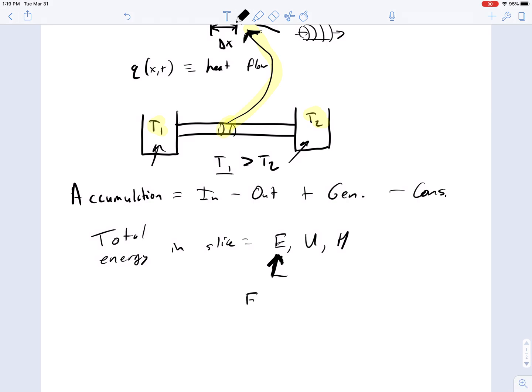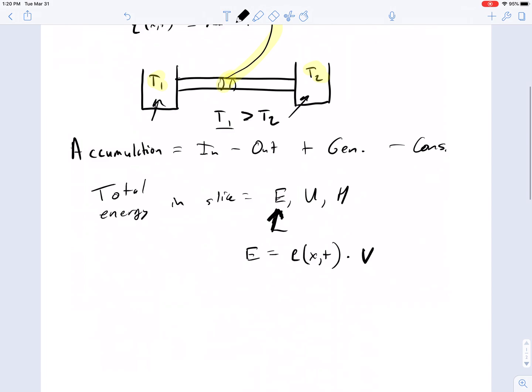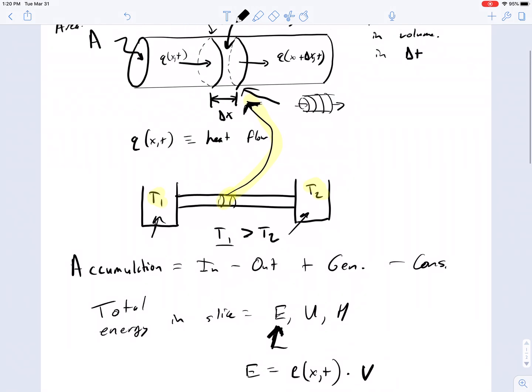The energy in this small slice is equal to some energy density at a position in time in that slice times the volume of the slice. So there's some little e at x of t inside of there. The volume of the slice is simply A times delta x, where A is the cross-sectional area of this slice.